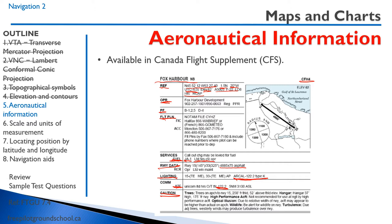There's a notable aviation accident at Fox Harbour — a Bombardier Global Express crash about ten years ago, with issues including unqualified pilots. The Canada Flight Supplement also includes an aerodrome chart showing the airport layout, surrounding features, and within five nautical miles the minimum safe altitudes — how high the obstacles are around the airport.